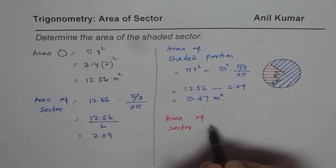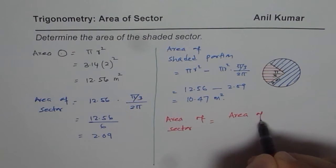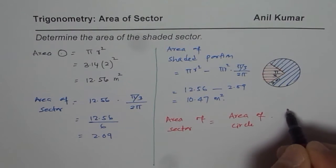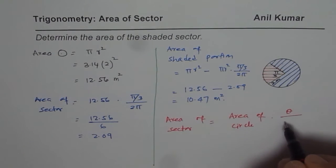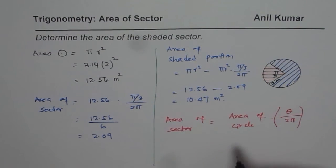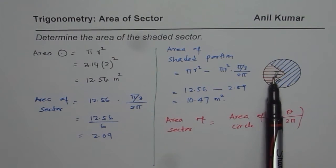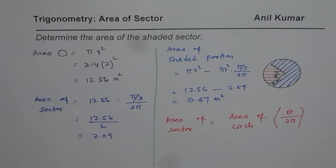Formula for area of sector is area of circle times the ratio of angle theta, the center angle divided by 2 pi. Times this factor gives you area of the sector. In our case, the angle given to us was pi by 3 and so we use this formula here. So that is how these questions should be done. Thank you and all the best.